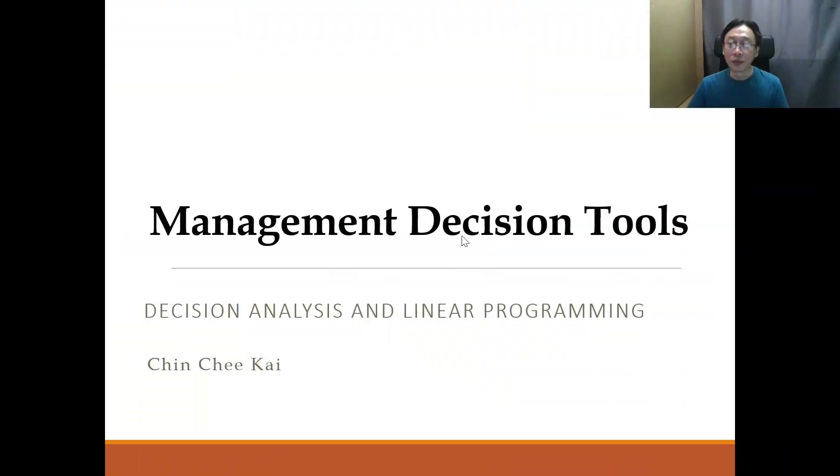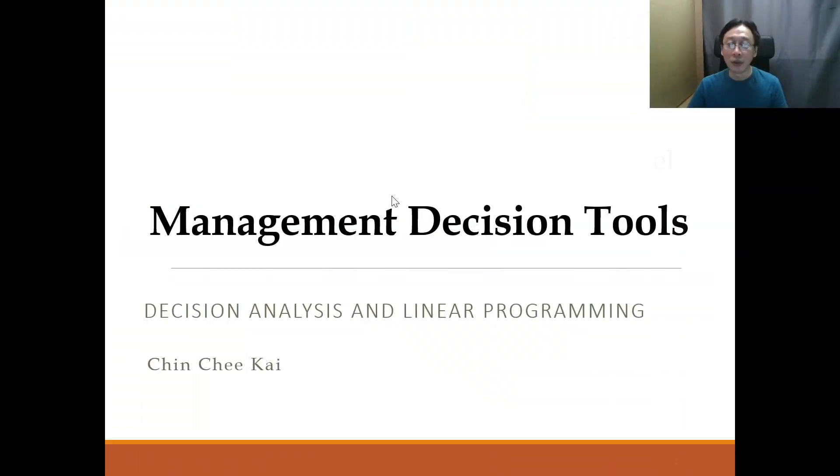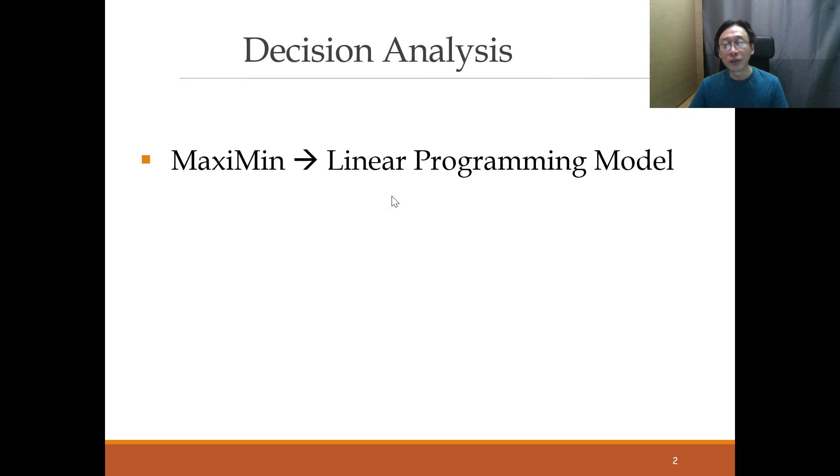So what we're going to do today is to try to see how we can use a linear programming model to do what decision analysis can do. Namely, in one of the strategies in making decisions, we studied Maximin decision-making strategy. And Maximin deals with making decisions without probabilities.